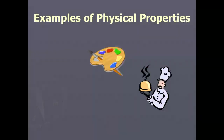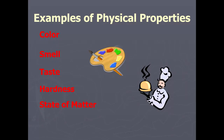For example, physical properties are things like the color of an object, the smell of an object, the taste of an object, the hardness of an object, the state of matter the object is in. Also things going along with state of matter like the boiling point, the freezing point, and the melting point of that substance.